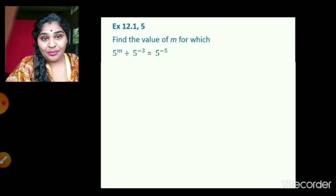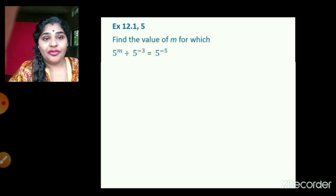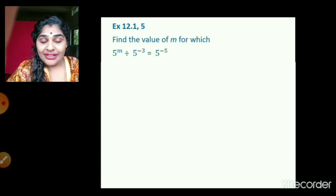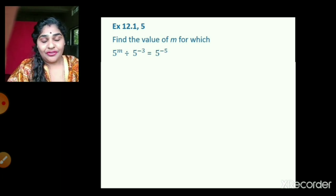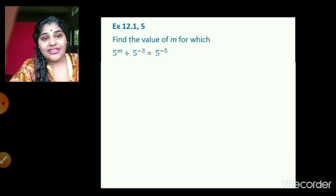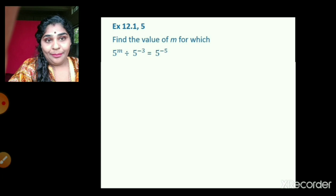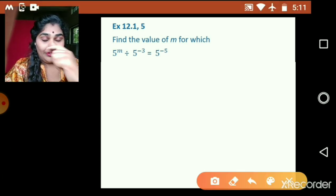This is the second bit in question number 5. Find the value of m for which 5 raised to m divided by 5 raised to minus 3 is equal to 5 raised to negative 5. So here children, we have to solve and find out the value of m.